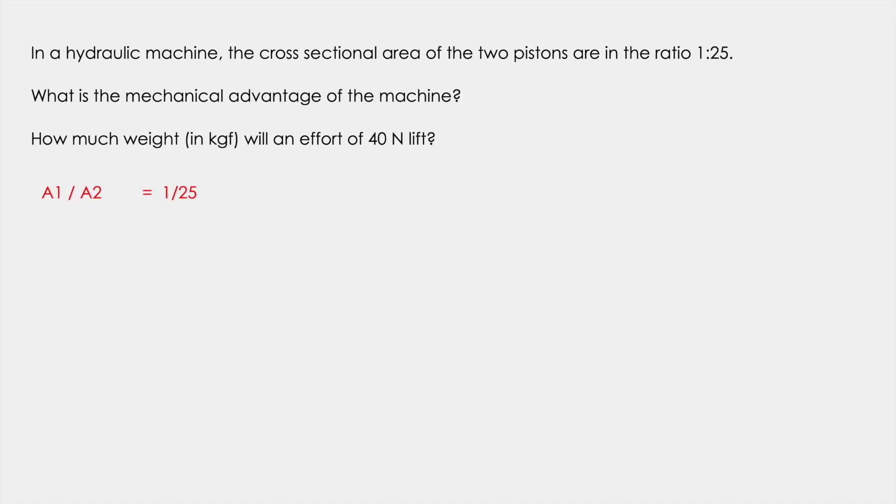So here the ratio of the cross sectional area is A1 upon A2 is equal to 1 upon 25. And we need to find out the mechanical advantage first. So we know the formula for mechanical advantage and that is F2 upon F1. But we know that F2 upon F1 is equal to A2 upon A1. Now we have been given the ratio A1 upon A2. So we will use the reciprocal of A1 upon A2 that is 25 upon 1. And we get the mechanical advantage as 25.